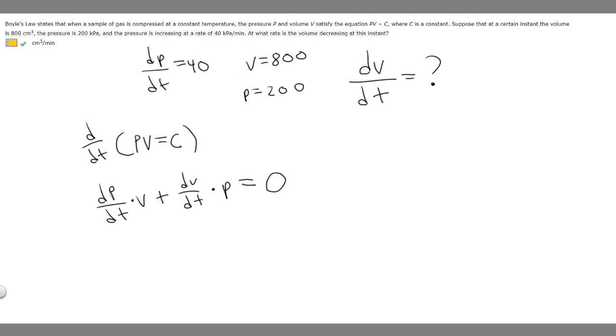Now we have all the numbers and can solve for dV/dt, so let's plug them in. We know that dP/dt is equal to 40, times V, and V is 800, times 800, plus dV/dt (that's what we're solving for), times P, and P is 200. That's all equal to zero. So 40 times 800 is going to be 32,000, plus dV/dt times 200.